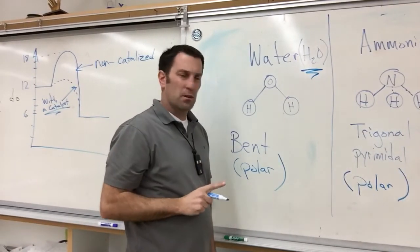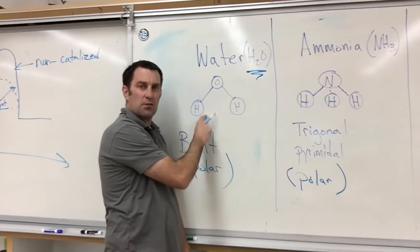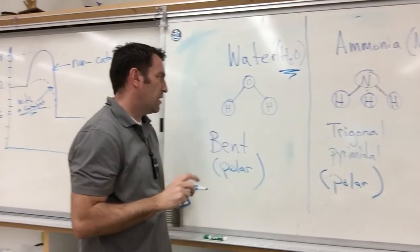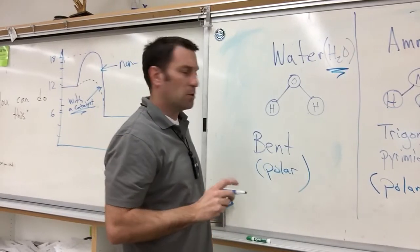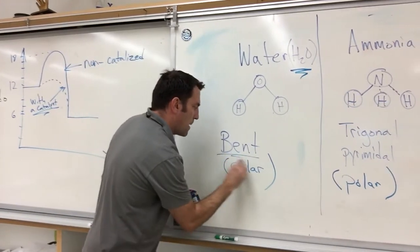And we've drawn water a lot, and water is an oxygen and two hydrogens. Well, when they align themselves, they don't align themselves in a straight line. They align themselves in this formation, and we call this shape bent.